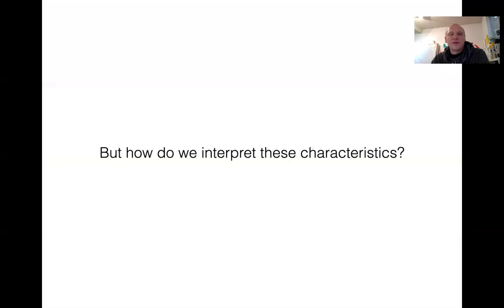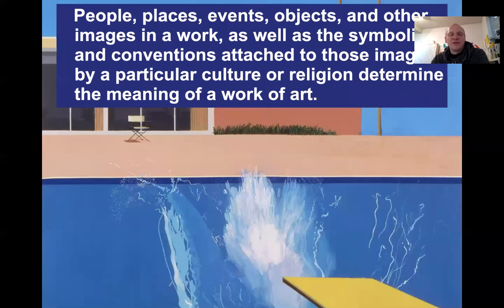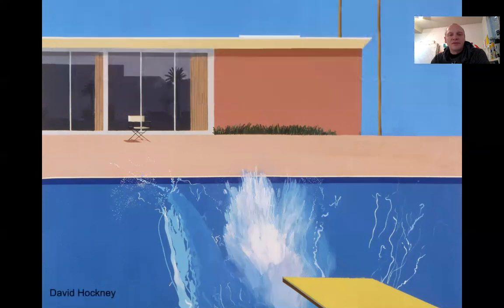How do we interpret these characteristics? The people, places, events, objects, and images in the work — as well as the symbolism and conventions attached to those images by a particular culture or religion — determine the meaning of the work of art. Here's a very different work, but with its own content. The cultural context is California in the 1970s. This is called A Bigger Splash by David Hockney.